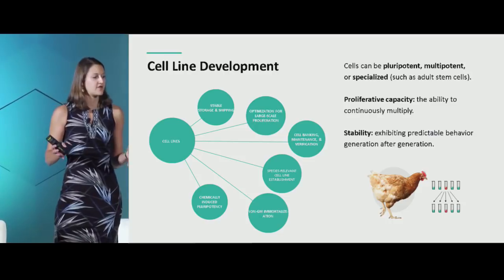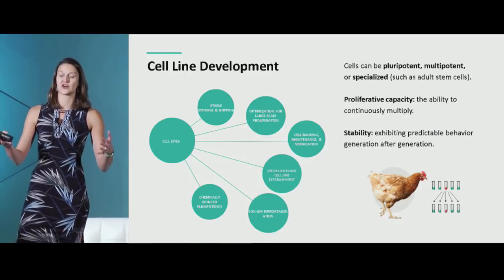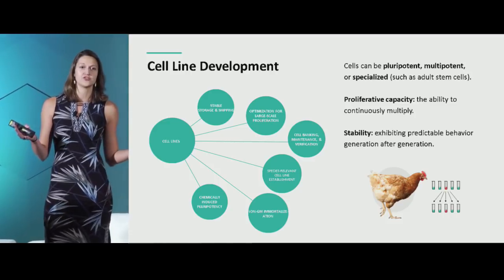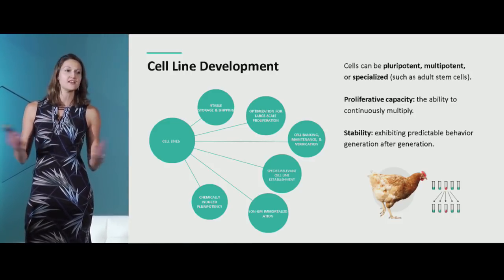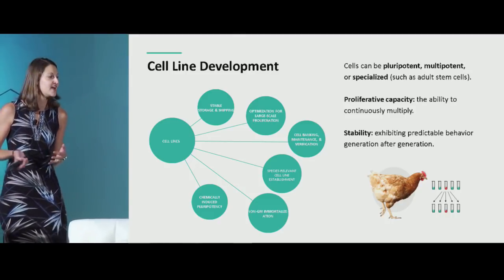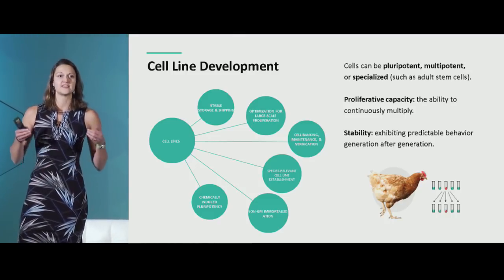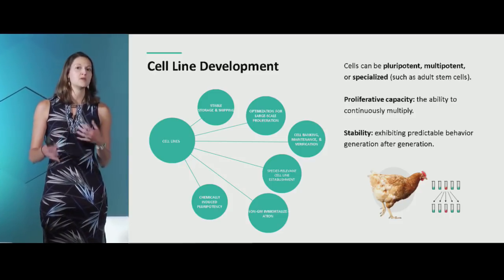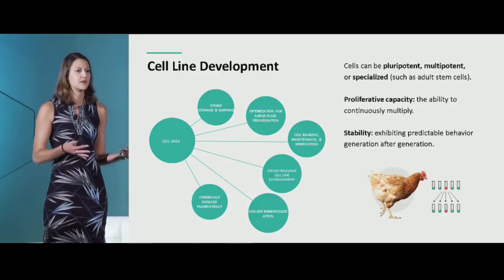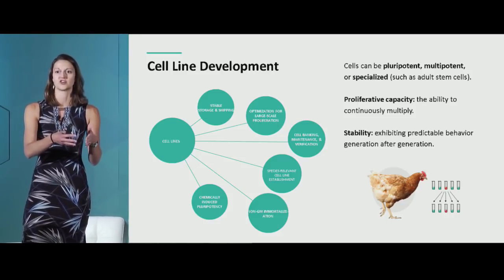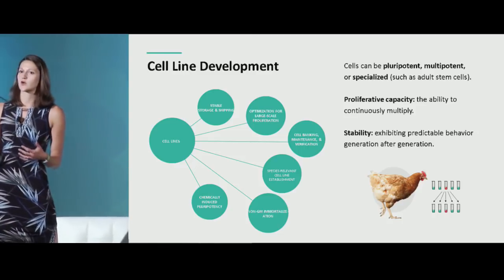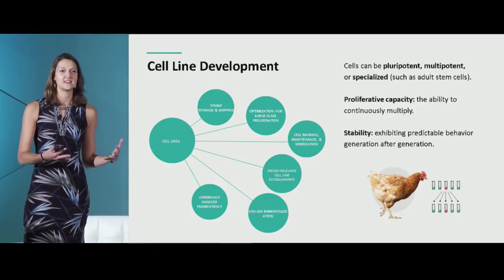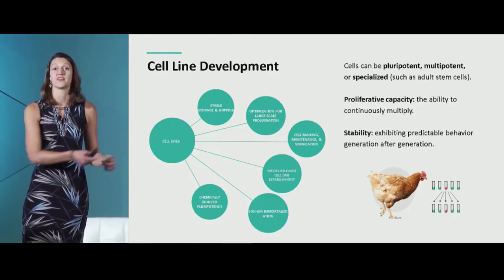On cell lines — there are a number of terms worth knowing. The cells we work with can be pluripotent, meaning they can become any cell type in the body: nerve cells, bone cells, muscle cells. They could be multipotent, meaning they have some options for final cell type but can't go in any direction. Or they can be more specialized cell types — for example, an adult muscle stem cell that is essentially fated to go one direction. The choice depends on economic factors as well as how easy the biology is to finesse these cells into becoming what you want.